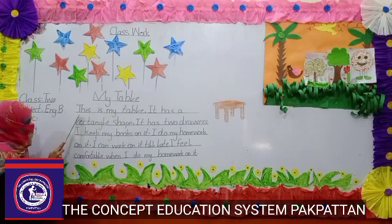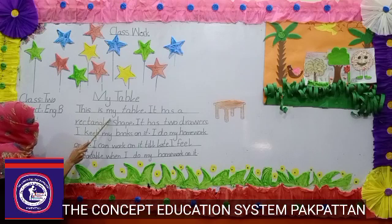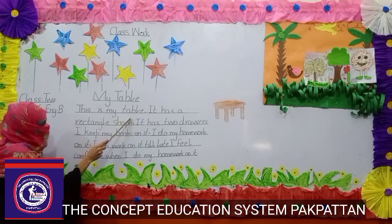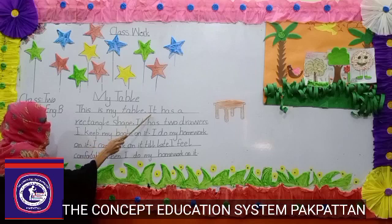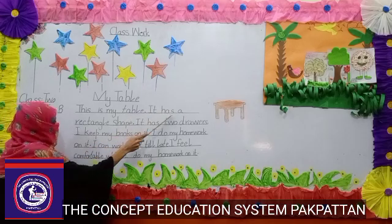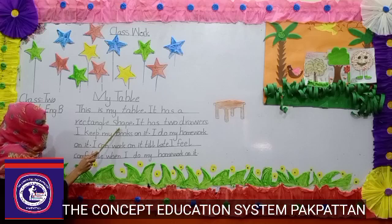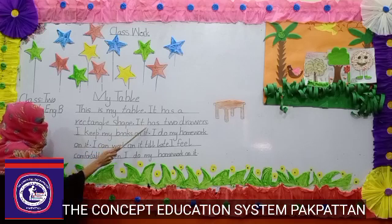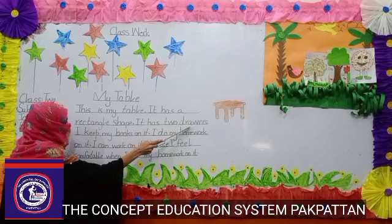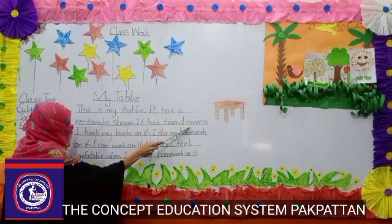Okay, let's start reading. This is my table. It has a rectangle shape. It has two rows.